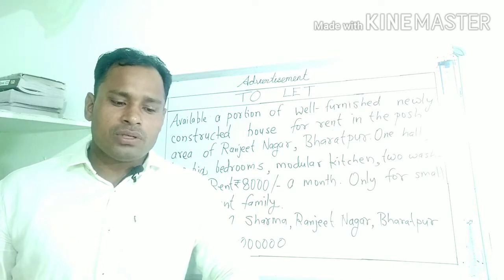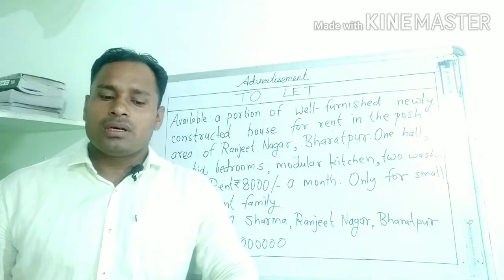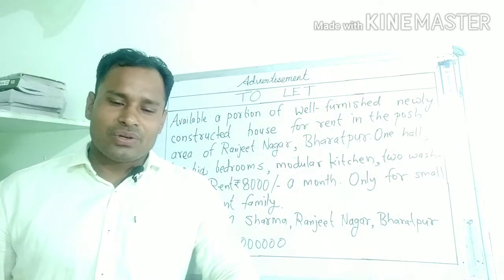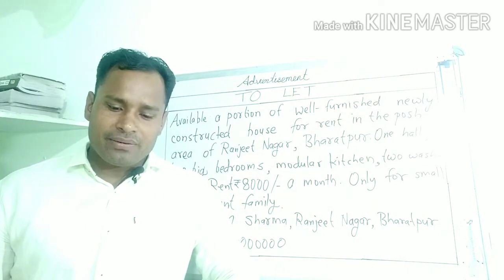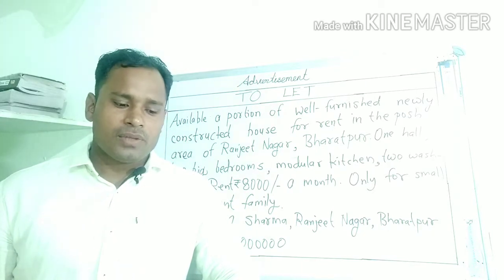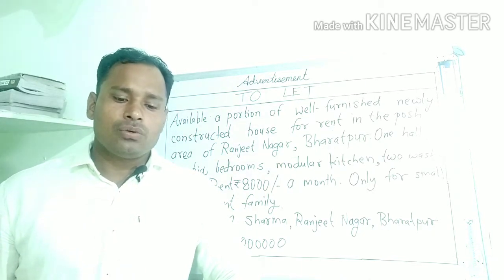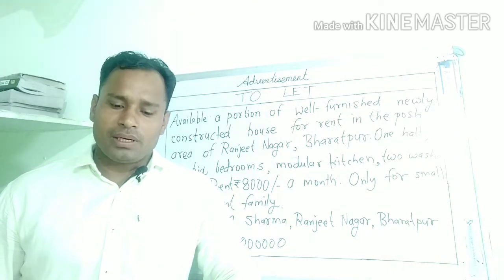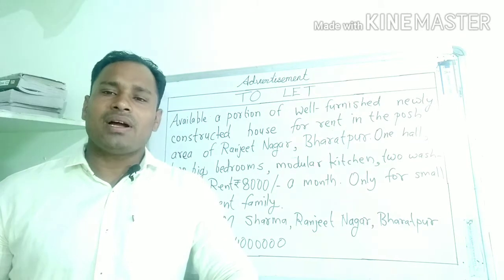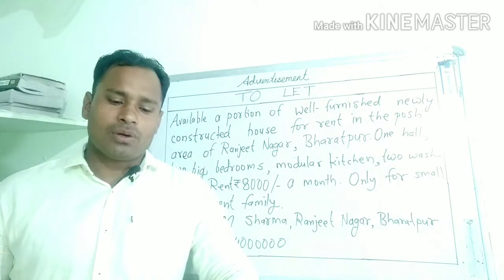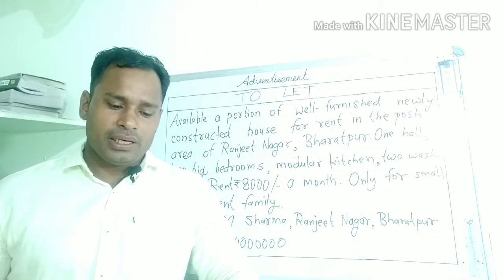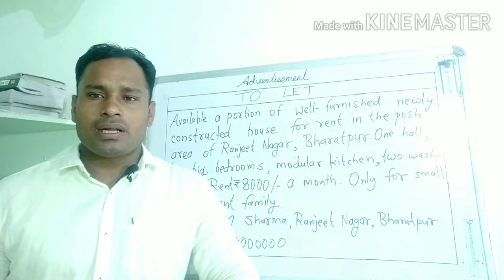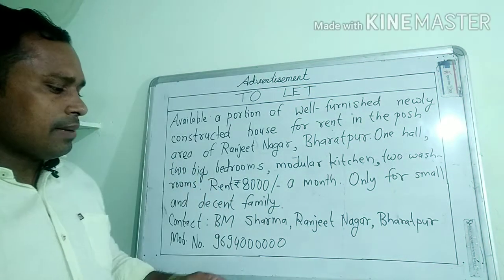Question आएगा: You have constructed a new house — आपने एक नया मकान बनाया है। You want to let out a portion of that house — आप उस मकान का एक portion, एक भाग, किराये पर उठाना चाहते हैं। Write an advertisement to be published in the classified columns of a local newspaper — local newspaper के classified column में To Let के लिए अपना विज्ञापन publish करवाना है।